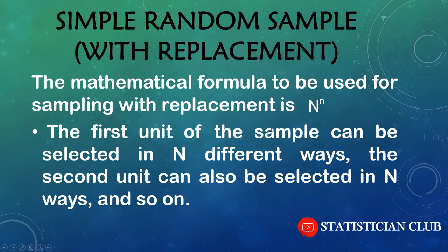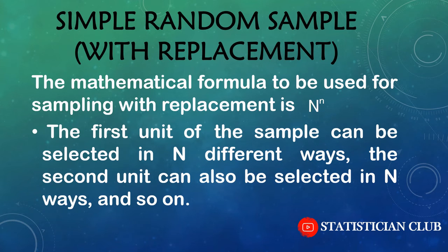The first unit of the sample can be selected in N different ways and the second unit can also be selected in N different ways, because when we select one unit we study it and return it to the population again. So at the selection of the second unit the total number of population units remains the same. After studying a selected unit we return it back into the basket, so these units have equal chances to be selected again. Our population remains the same in sampling with replacement, and due to this reason each unit has equal chances to be selected.